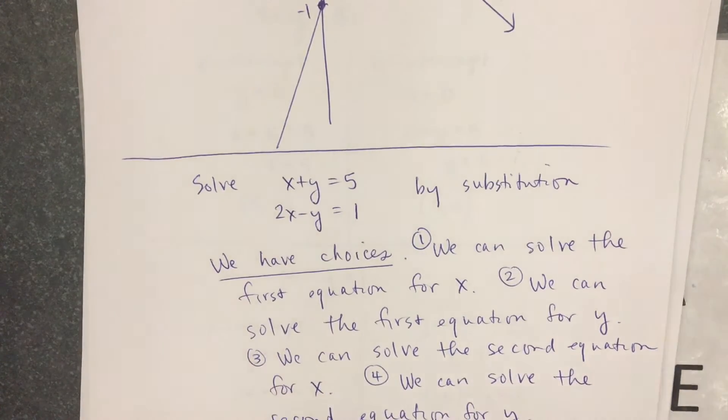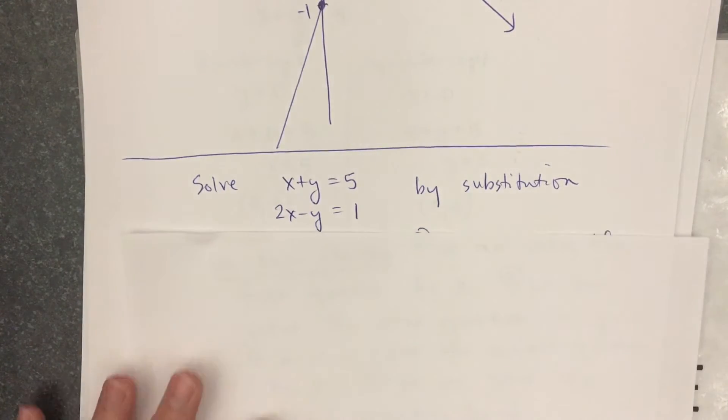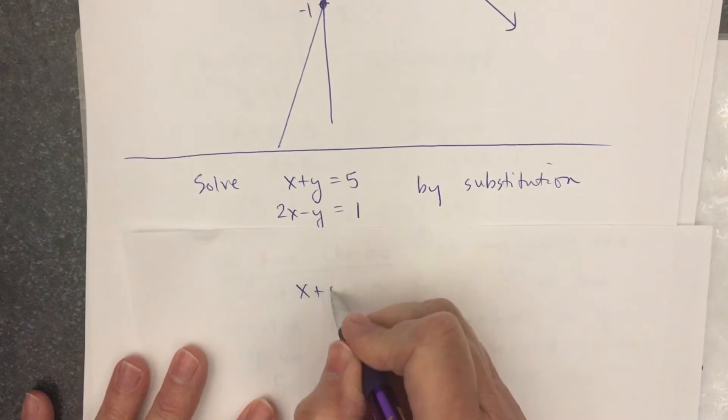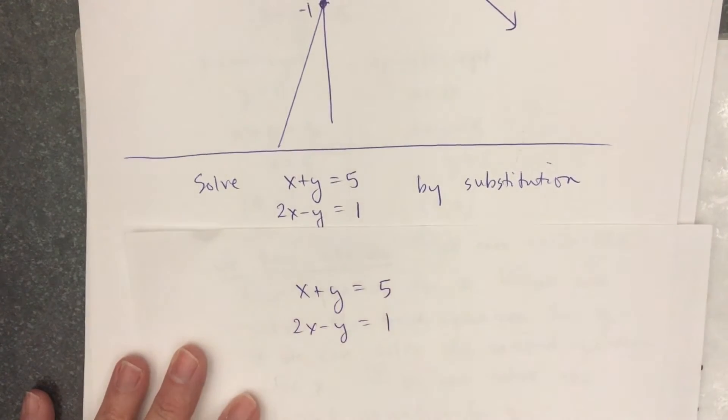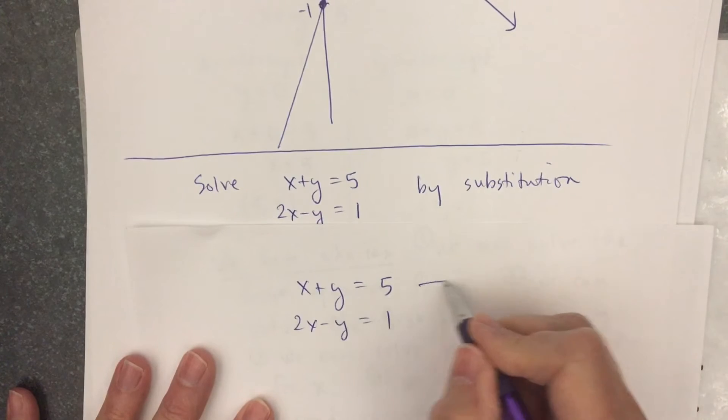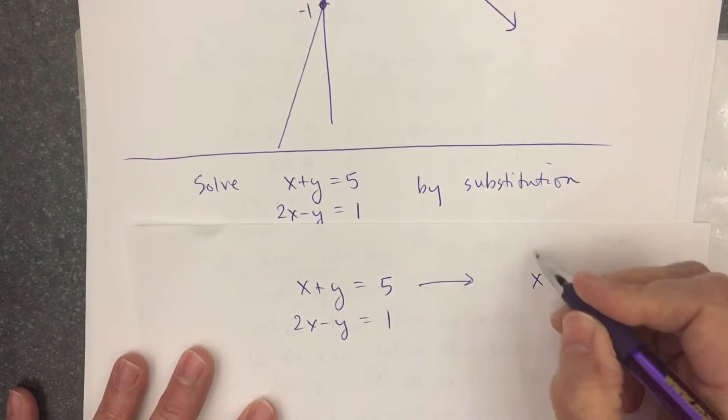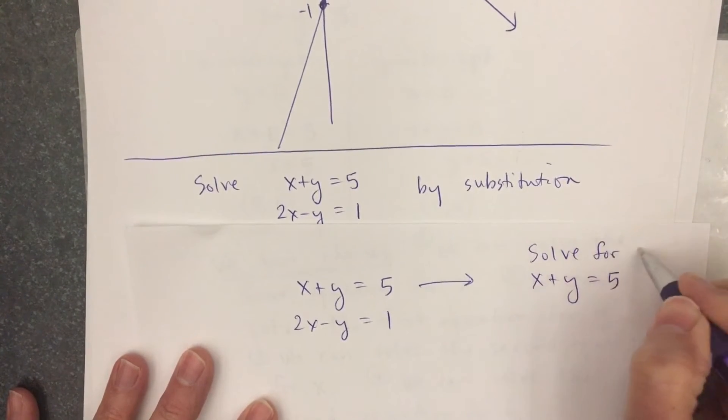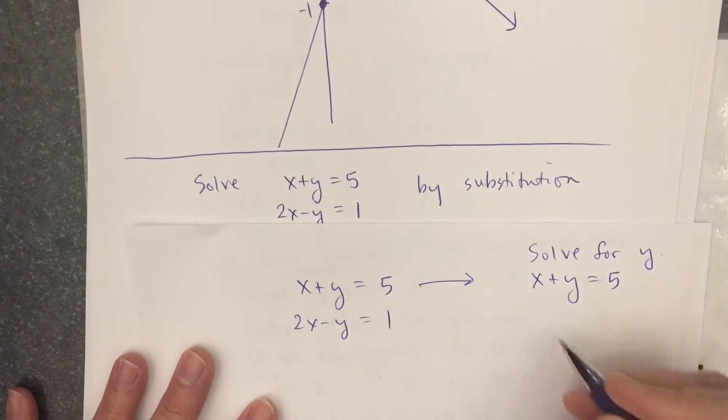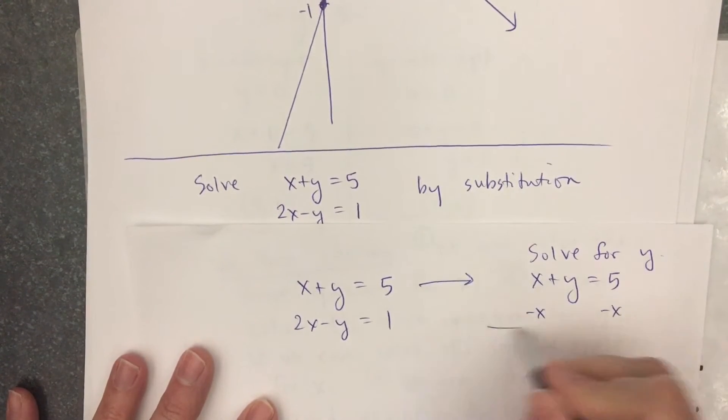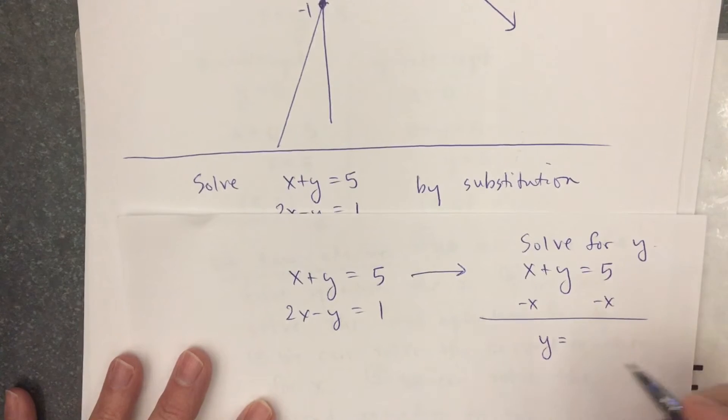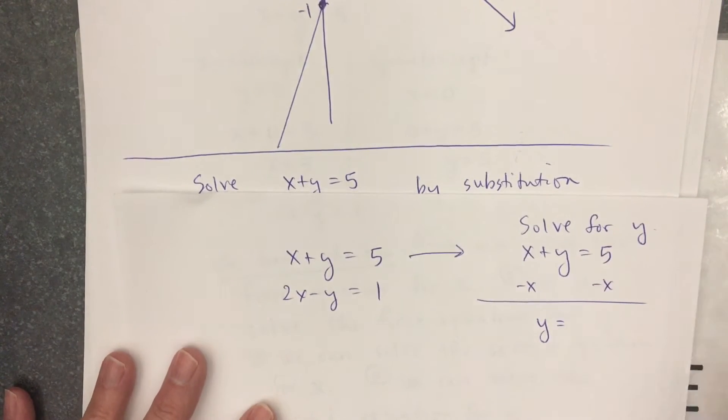I'm going to take the second choice, just because. So I'm going to write the problem again, x plus y equals 5, 2x minus y equals 1. And I'm going to take the first equation and solve it for y. I'm going to write that, solve for y. So that means I'm going to do minus x on each side. And I'll have y equals 5 minus x.